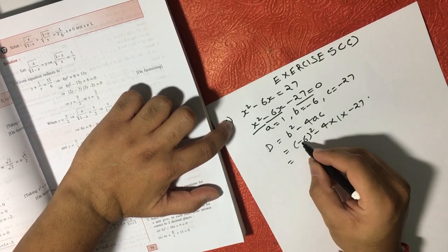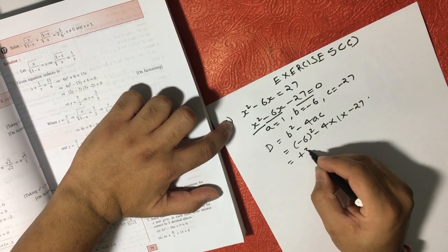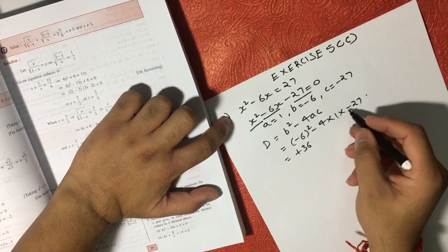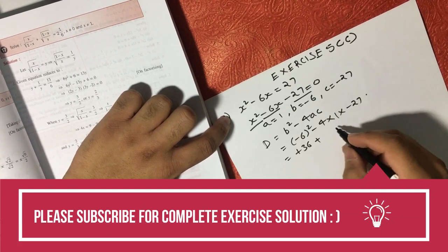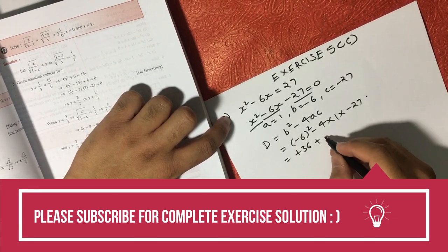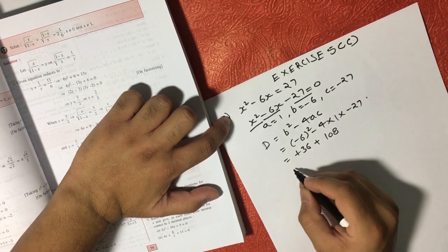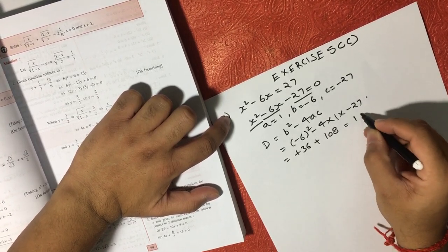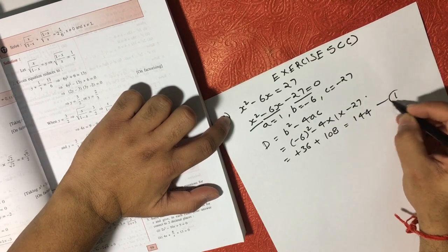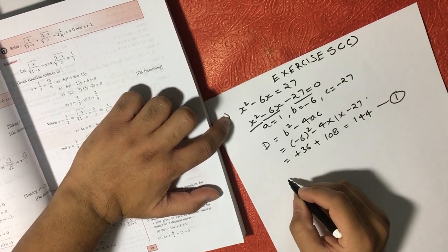So minus times minus is plus, 6 squared is 36, 36 minus minus is plus, 4 into 1 is 4, 4 into 27 is 108, 36 plus 108 becomes 144. This is your equation number 1.